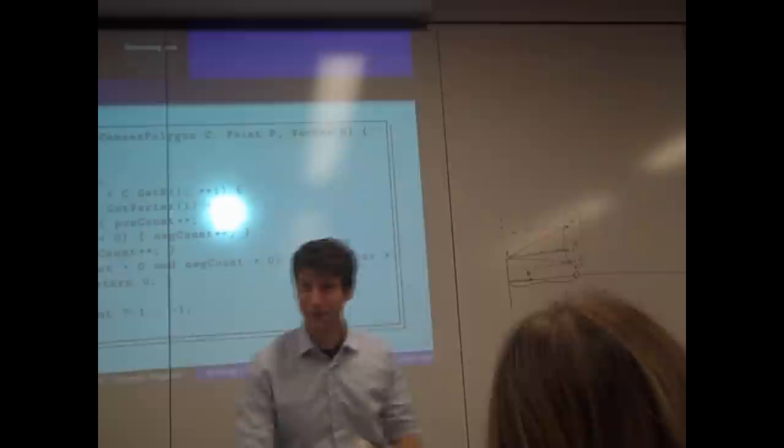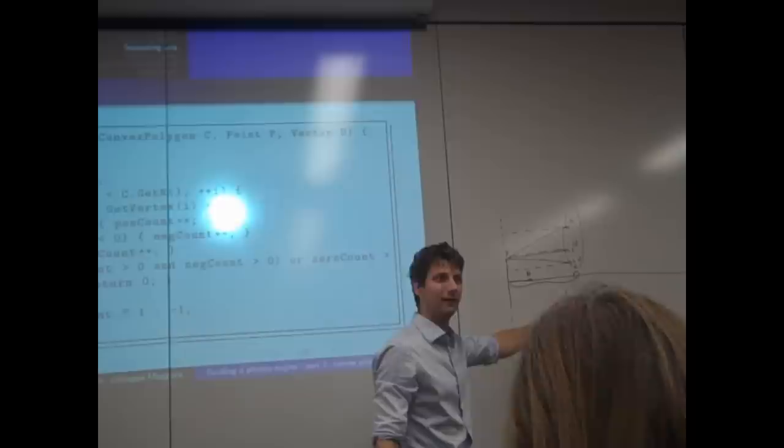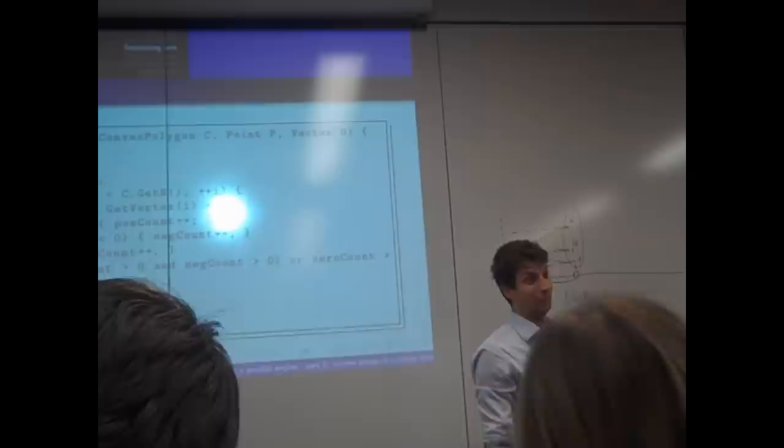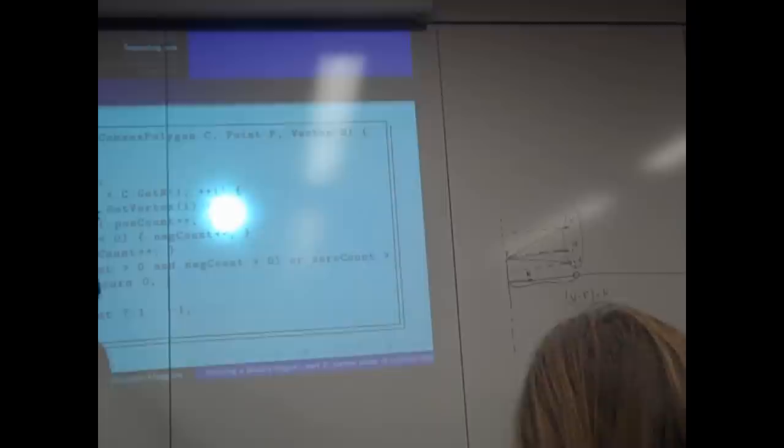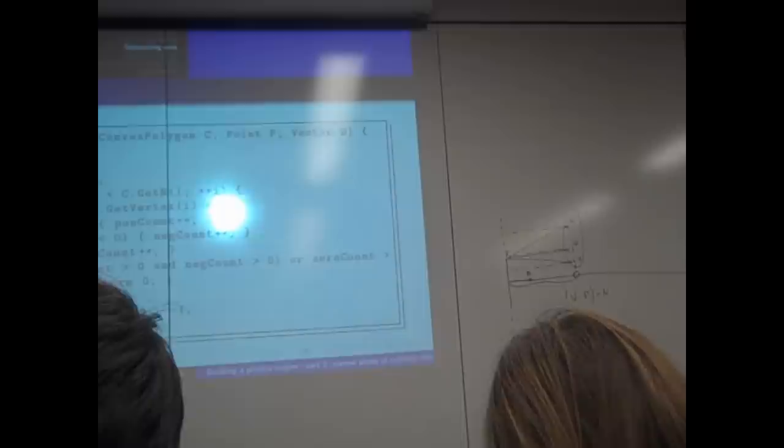Do not underestimate how important something as simple as the dot product is when you do graphics and physics. When you find an expression like (V minus P) dot N, you are computing the distance between vertex V and the edge or face defined by normal N through point P. You'll find this in plenty of places.